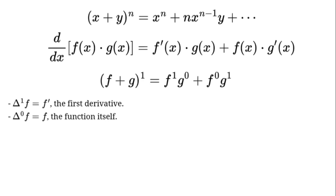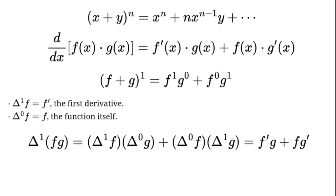Plugging in: delta to the power of 1 times (f times g) equals delta to the power of 1 times f times delta to the power of 0 times g plus delta to the power of 0 times f times delta to the power of 1 times g, which equals f prime times g plus f times g prime. That's the product rule.